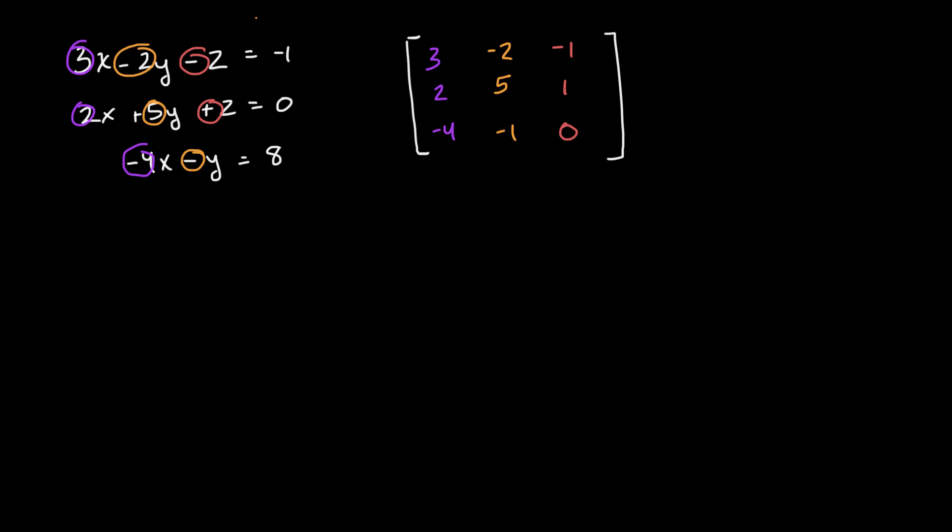If we said that that is going to be multiplied by a three-dimensional vector that is, I guess we could say unknown, X, Y, and Z, that is going to be equal to a second three-dimensional vector, which we do know. And that's negative one, zero, and eight.